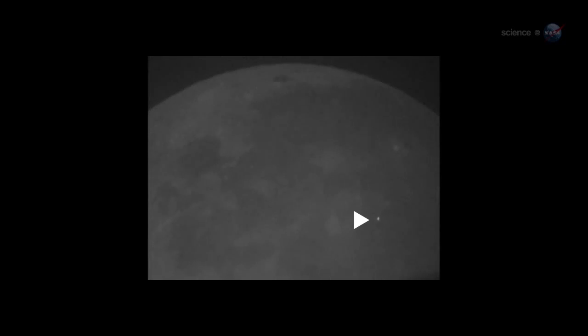Anyone looking at the Moon at the moment of impact could have seen the explosion, no telescope required. For about one second, the impact site was glowing like a fourth-magnitude star.